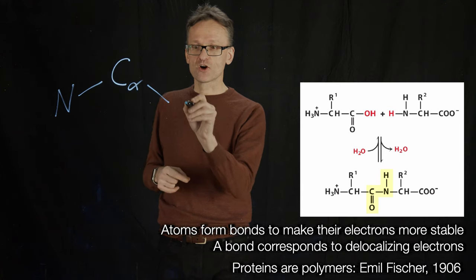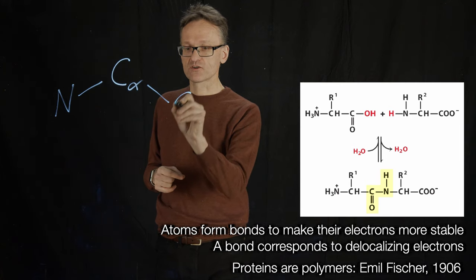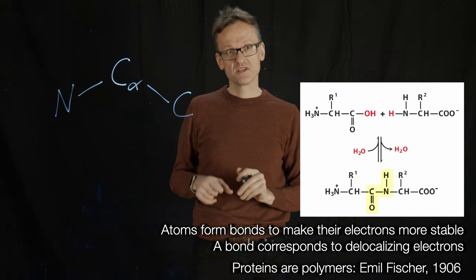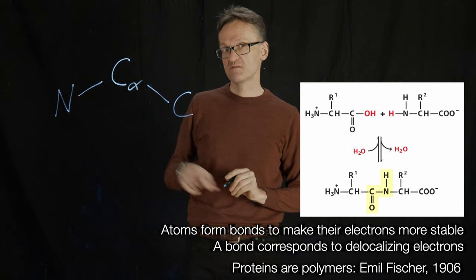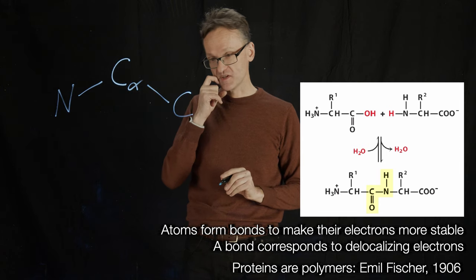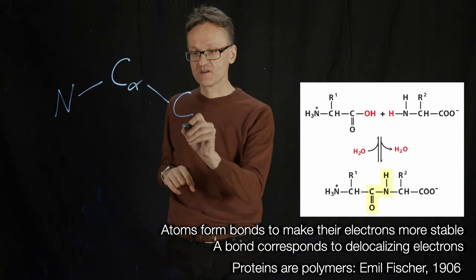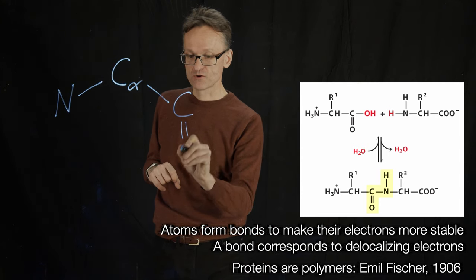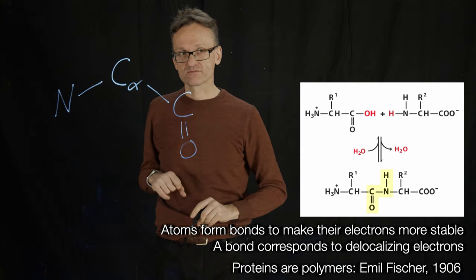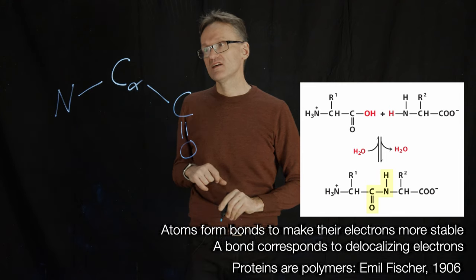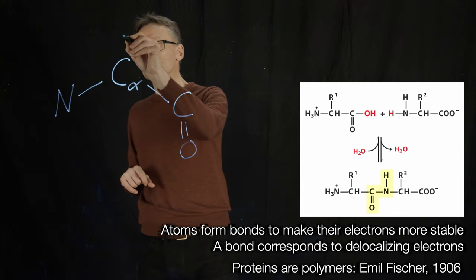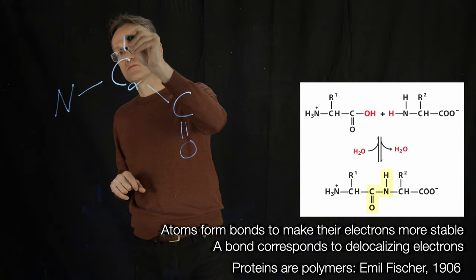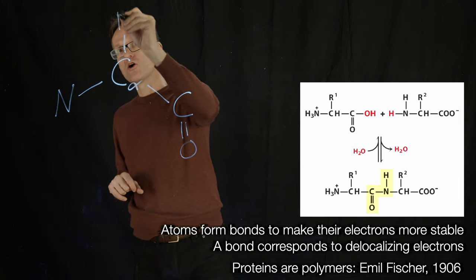After the alpha carbon we have a second carbon — this is not the beta carbon; the beta carbon would be in the side chain. That carbon is bound to an oxygen, and then we have something called a side group that we typically denote with R.